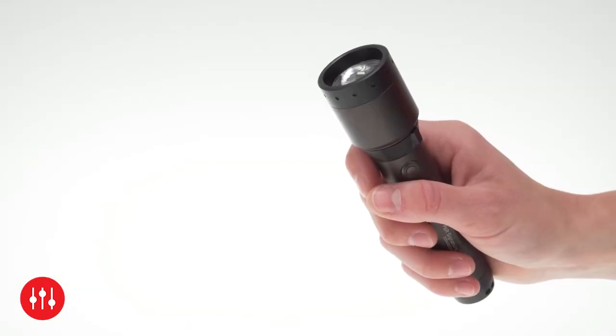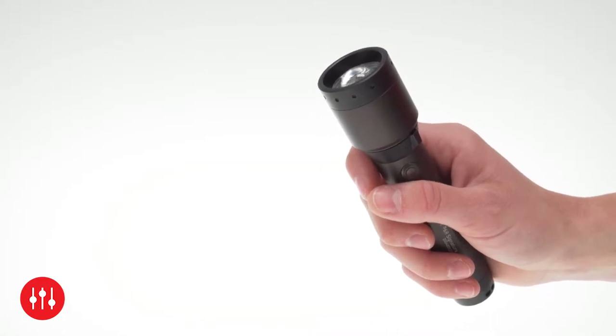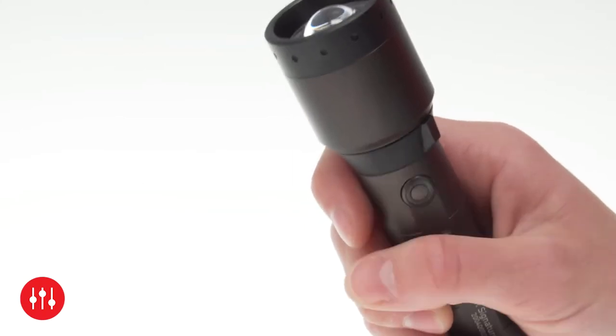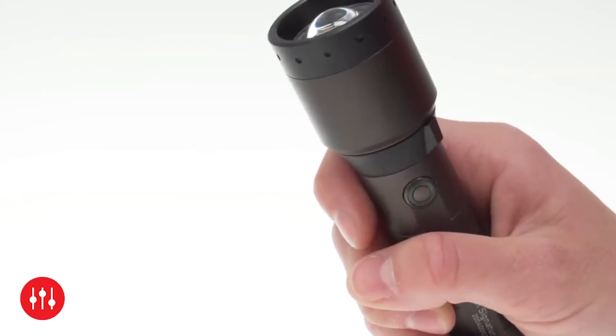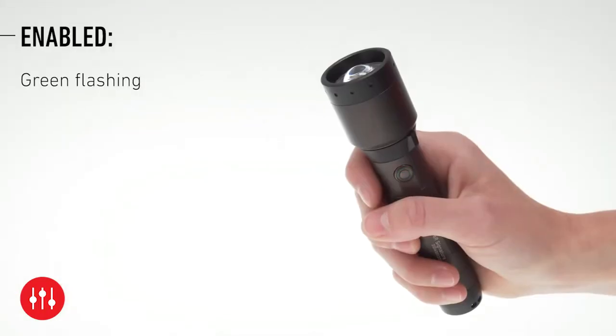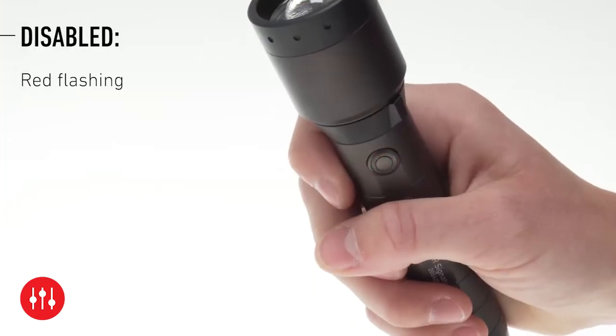The emergency mode and the backup mode can be activated and deactivated in the same way. For the emergency mode you must press the switch 3 times after holding it pressed for 8 seconds. For the backup mode you must press the switch 4 times. Successful activation is indicated by the switch flashing green twice, and deactivation is indicated by flashing red twice.